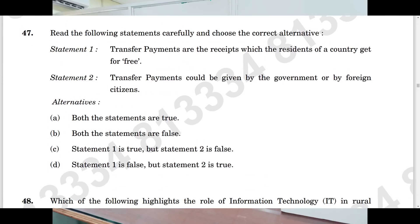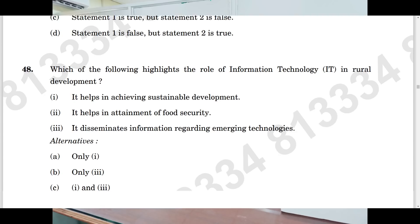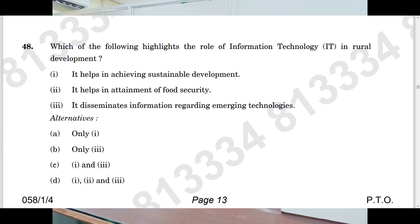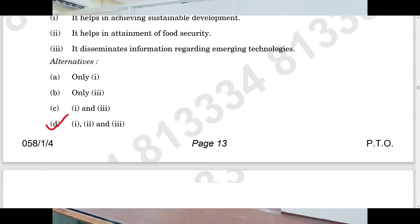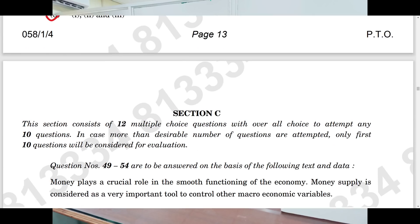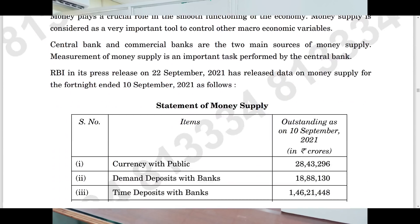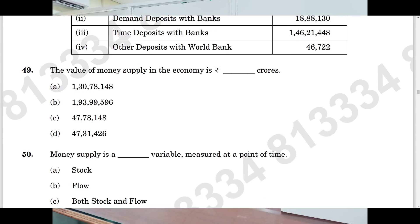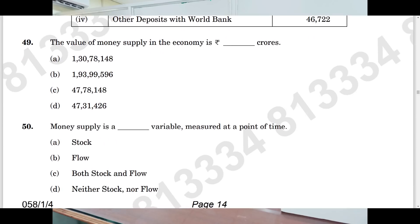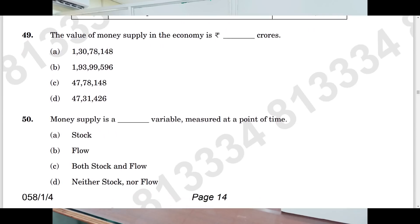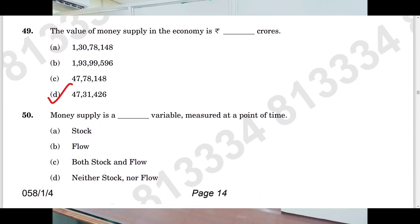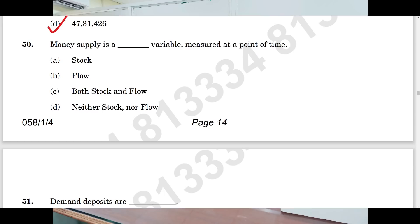Question number forty-seven: A. Question number forty-eight: D. Now section C has arrived. Question number forty-nine: D — after calculation. Question number fifty: A.